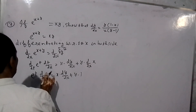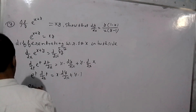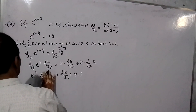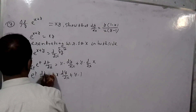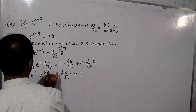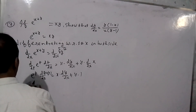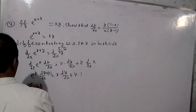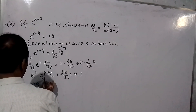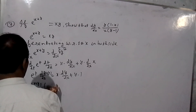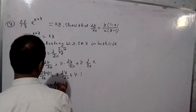Substituting t back, we get e raised to the power x plus y. The derivative of (x plus y) with respect to x is 1 plus dy/dx. So the left side gives e raised to power (x plus y) times (1 plus dy/dx).